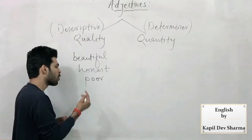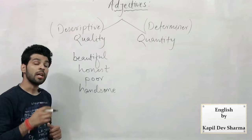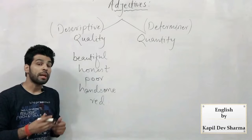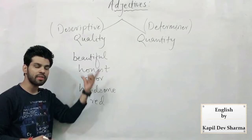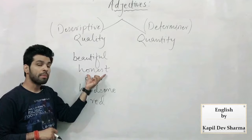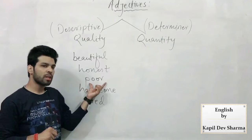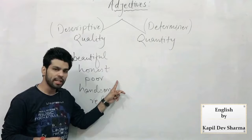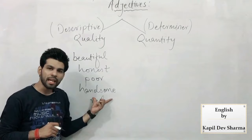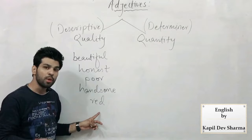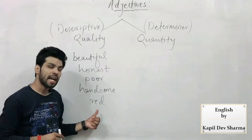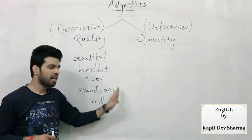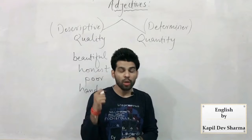Similarly, कोई weak हो सकता है, कोई मेहनती हो सकता है, कोई बहुत सुंदर हो सकता है। Colors जैसे red, black, blue — ये सारी quality। Handsome person, red pen, poor person, honest person, beautiful girl — noun के बारे में कुछ भी describe करने वाले शब्दों को adjective कहा जाता है। वो शब्द जो किसी noun की quality दिखा सकते हैं — first glance में — उन्हें हमेशा adjective कहा जाता है।